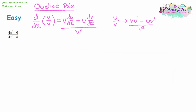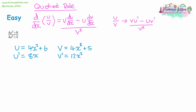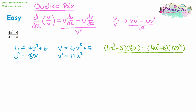Moving on to the next example. We take the numerator as u: 4x squared plus 6, and the denominator as v: 4x cubed plus 5. With the quotient rule, the numerator must always be u. We find u dash: 4 times 2 is 8, reduce the power, and 6 goes away — so 8x. V dash: 4 times 3 is 12, reduce the power, and 5 goes away — so 12x squared. Now substitute into the formula: v is 4x cubed plus 5, multiplied by u dash which is 8x, take away u which is 4x squared plus 6, multiplied by v dash 12x squared, all divided by v squared: 4x cubed plus 5, all squared.